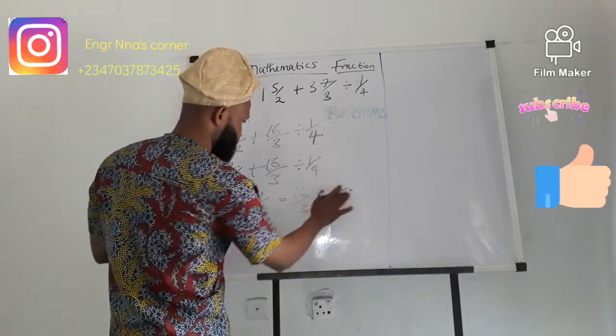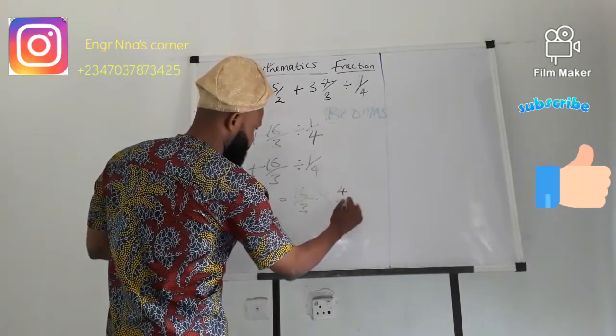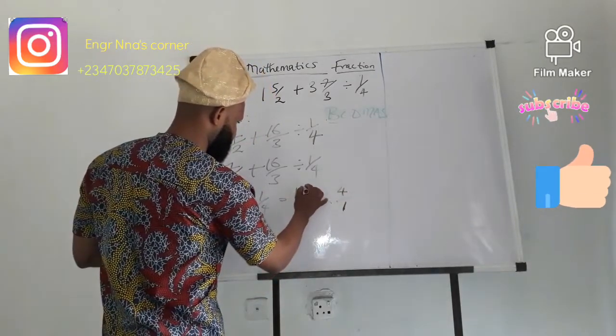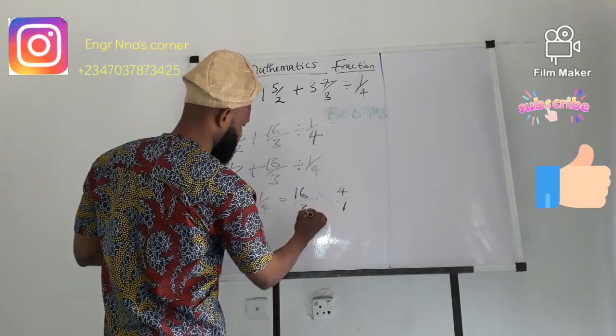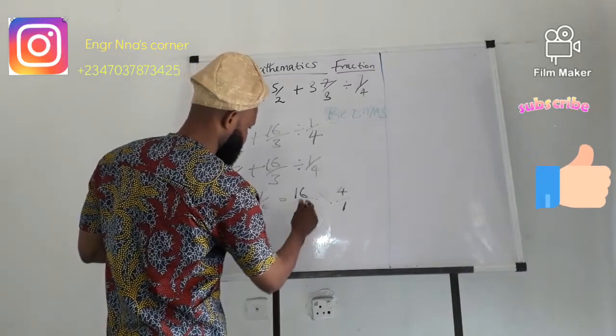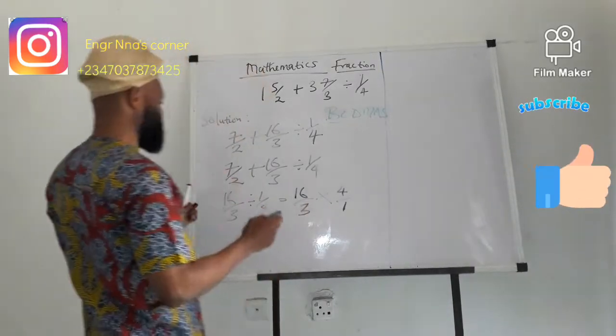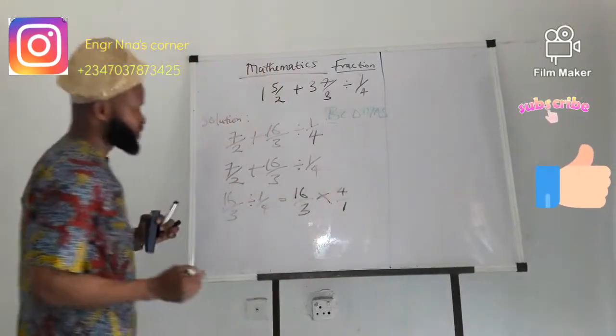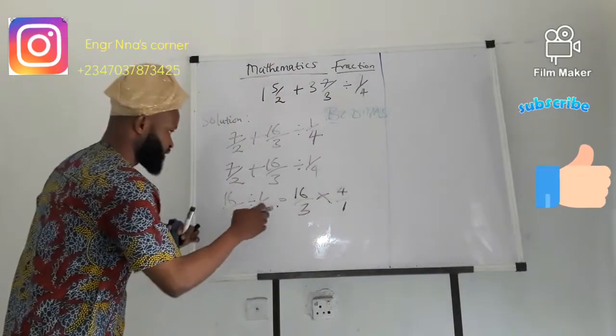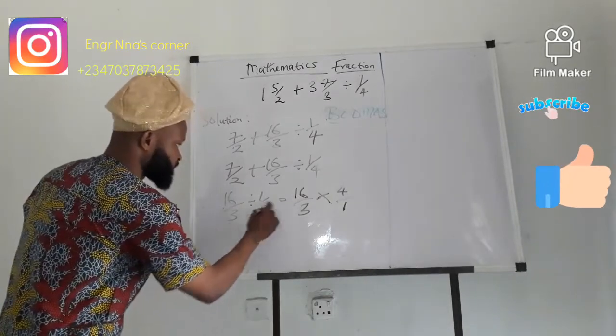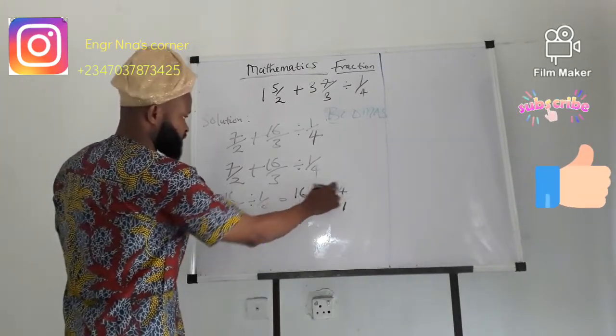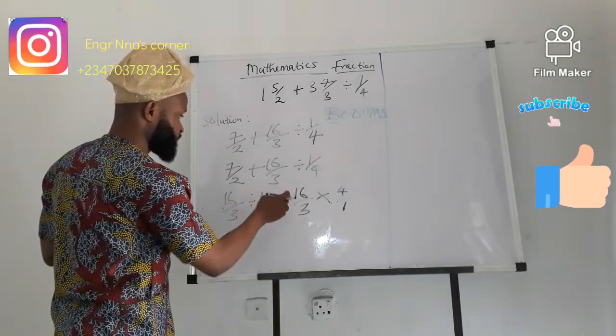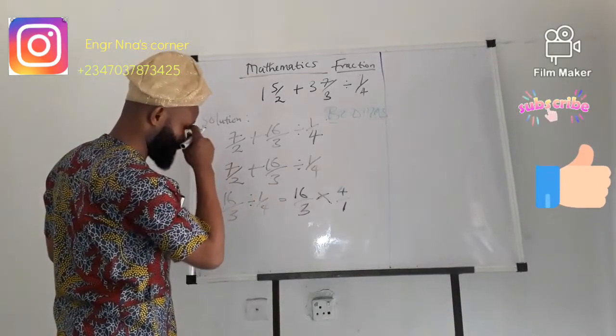So, by inversing it, we have 4 over 1. We go ahead and say 16 times 4 would give us 64 over 3.